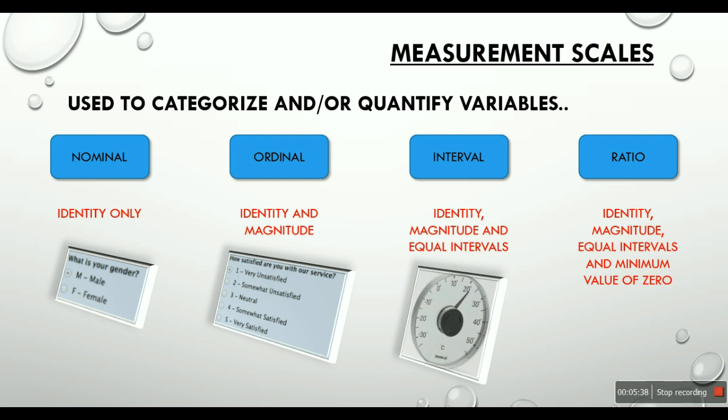Talking about the ratio scale of measurement. Let's look at an example, which is rabbit to carrots. So if you look at this example, we can see what's the ratio of rabbits to carrots. Probably it's one is to two. So every rabbit gets two carrots. And this can never go below zero. So it has an identity. It has a magnitude. The intervals are equal. And the minimum value is zero. So this is about measurement scales.